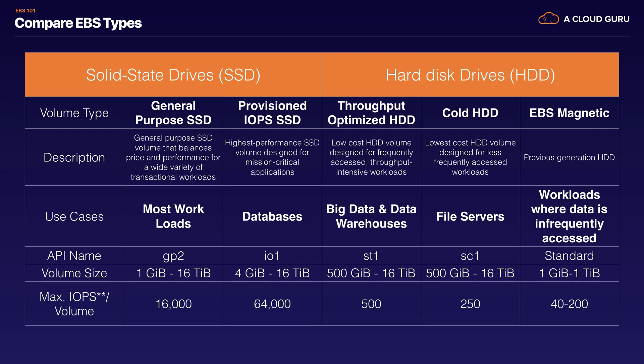We then have EBS magnetic, which is basically the previous generation hard disk drive. It is still available and you can still use it in the console. This is for workloads where data is infrequently accessed — it might be where you're doing a bit of data archiving but for some reason opt not to use Glacier. The IOPS for that is between 40 to 200.